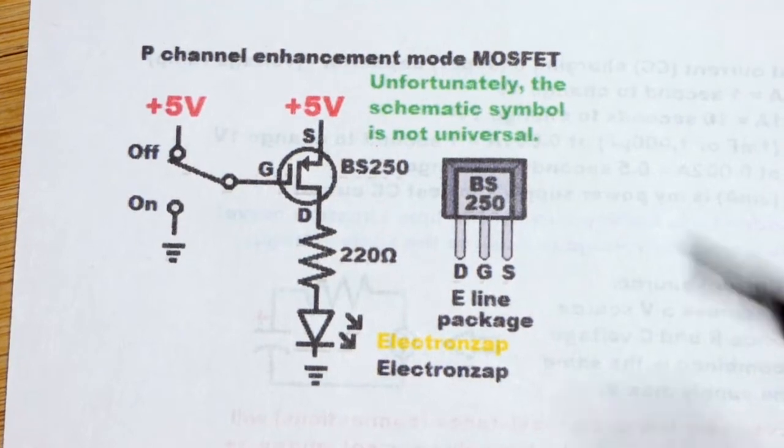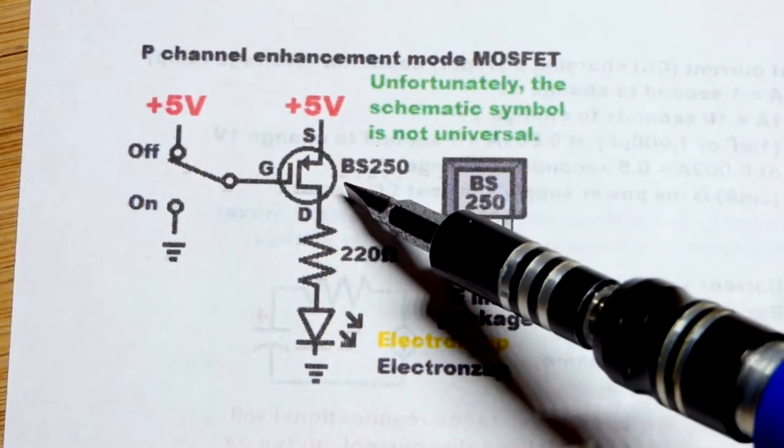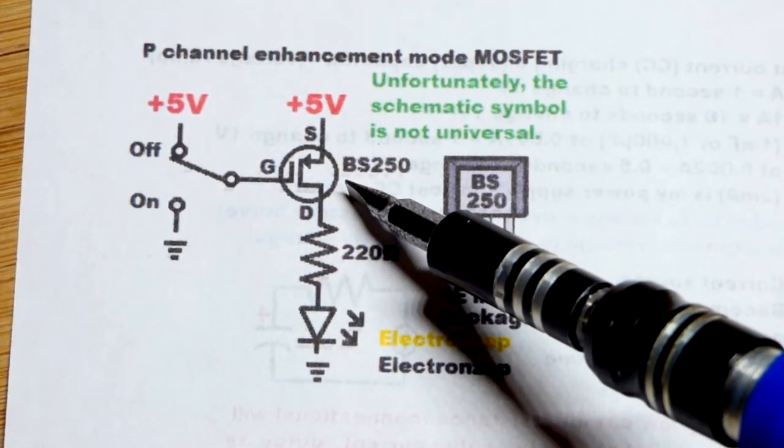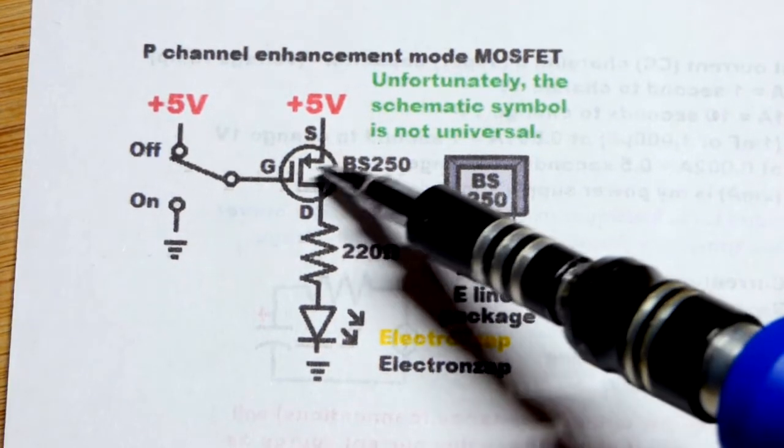And now that brings us to our schematic diagram and pin layout. Unfortunately, when it comes to field effect transistors, FETs such as the MOSFET and the JFET, they don't have universal schematic symbols. You'll see a whole bunch of different ones.